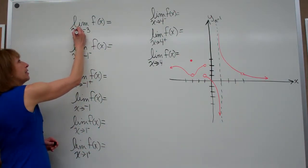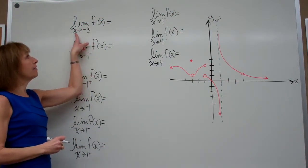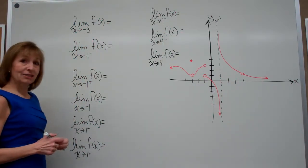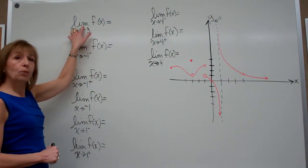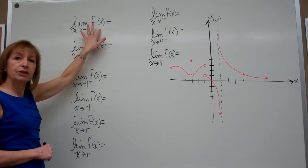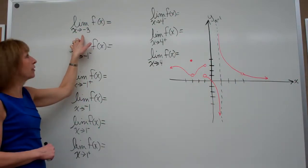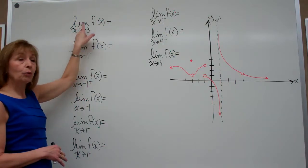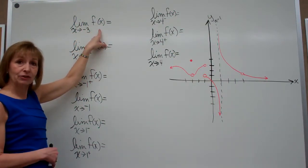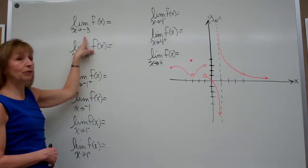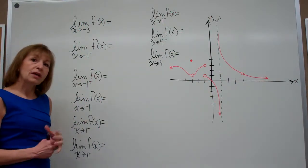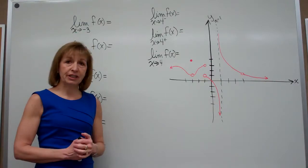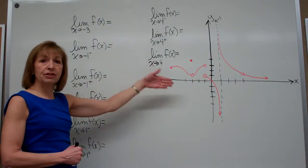And then there are the values subscripted underneath the limit — the independent variable and what that variable is approaching. When they ask us to find the value of a limit, we want to know what the values of the function are getting closer and closer to as we get as close as we choose to that value. I've graphed a piecewise defined function here and asked several different limit questions associated with that graph.